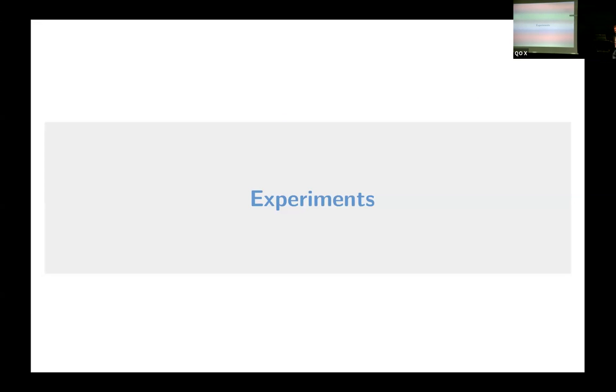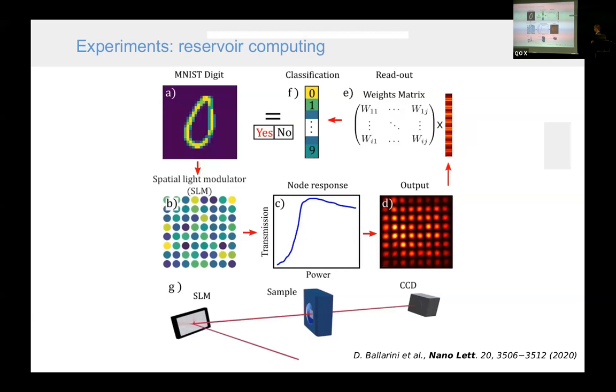Now I will discuss experiments. The first experiment was performed in the group of Dario Ballarini and Daniele Sanvitto in Lecce. And it was more or less following our idea with some slight modifications. Here this information was not encoded in time, but encoded in space using a spatial light modulator. This light was then directed to a sample, which was characterized by very non-linear response of the transmission. The output was monitored by a CCD camera. And this output was used as information in the last layer of the network, which applied weights that were determined during teaching and used for classification.